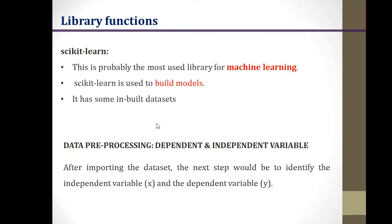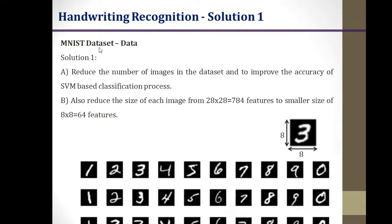Once we have our dataset, we have to do pre-processing. The dataset is available as a single matrix and we have to split it into the dependent variable and the independent variable, where the independent variable represents the input features and the dependent variable represents the output target. These two are the important components needed for supervised machine learning tasks.